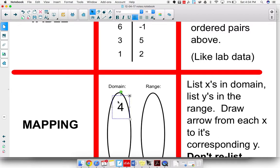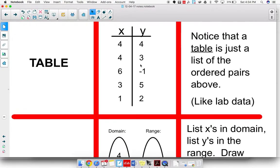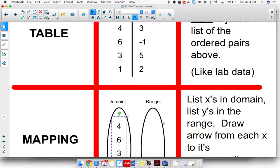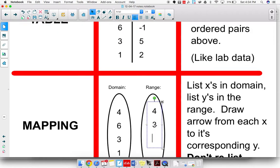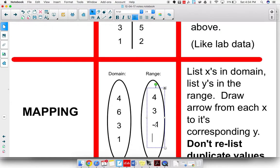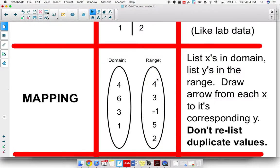So 4, 6, 3, and 1. And that makes up our domain. Our range are the Y values. So that's going to be 4, 3, negative 1, 5, and 2. See if I can remember that. So 4, 3, negative 1, 5, 2.